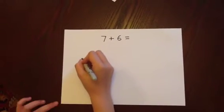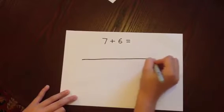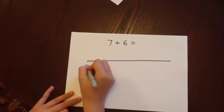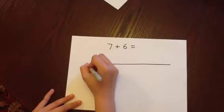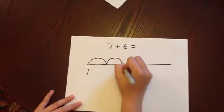Next, draw an empty number line. Put the first number at the beginning and jump on six jumps.